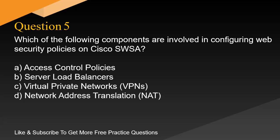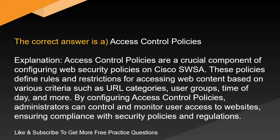Question 5. Which of the following components are involved in configuring web security policies on Cisco SWSA? A. Access control policies. B. Server load balancers. C. Virtual private networks (VPNs). D. Network address translation (NAT). The correct answer is A. Access control policies. Explanation. Access control policies are a crucial component of configuring web security policies on Cisco SWSA. These policies define rules and restrictions for accessing web content based on various criteria such as URL categories, user groups, time of day, and more. By configuring access control policies, administrators can control and monitor user access to websites, ensuring compliance with security policies and regulations.